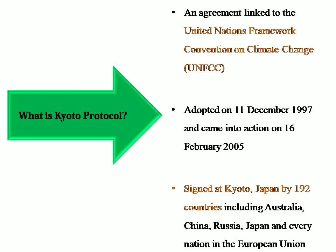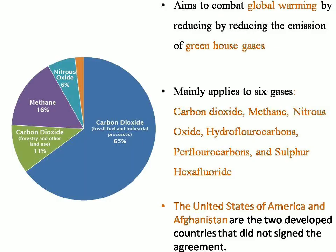The agreement was signed on 11th December 1997 and it came into force on 16th February 2005. This agreement got its name the Kyoto Protocol because it was signed at Kyoto, which is a city in Japan. The agreement was signed among 192 countries including China, Russia, Japan, and every nation in the European Union. The main aim of this agreement was to reduce global warming by cutting down the emission of greenhouse gases.